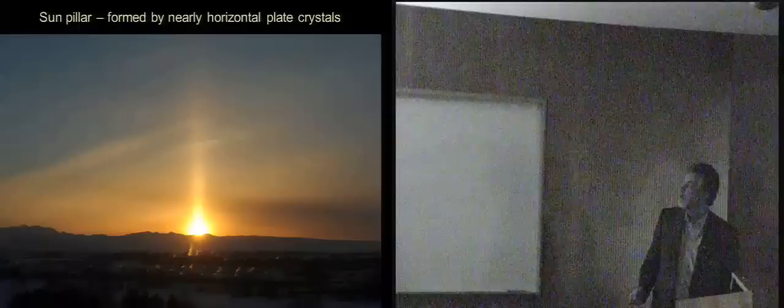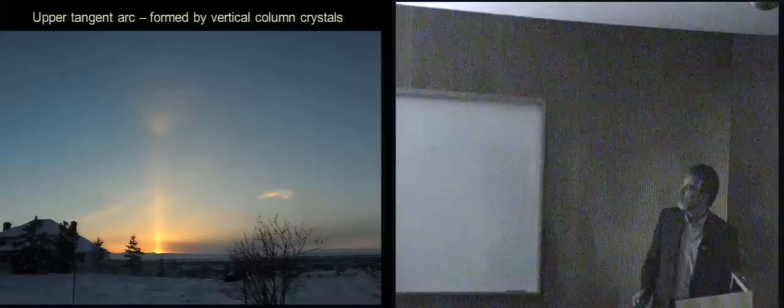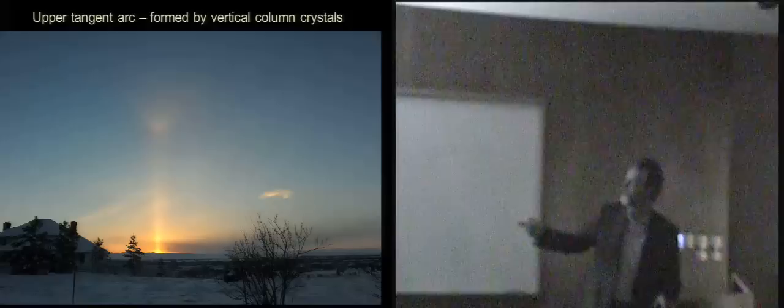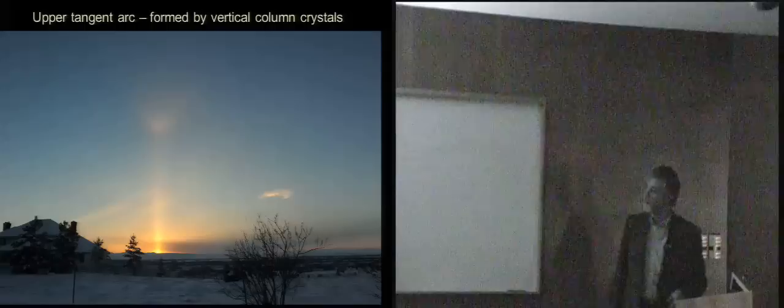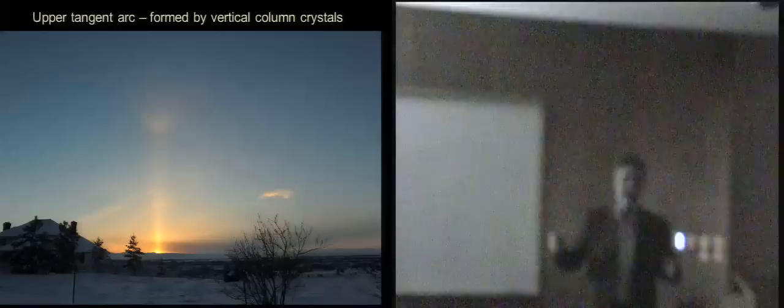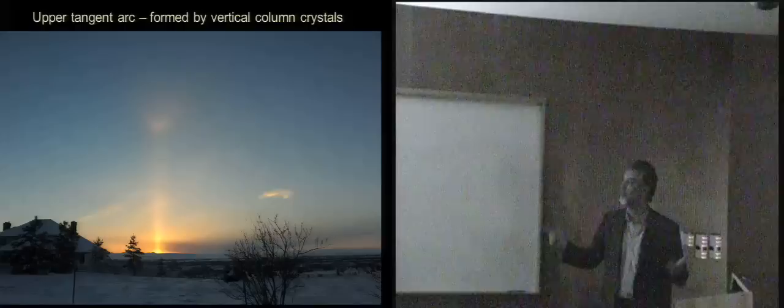A few minutes later this scene developed an upper tangent arc structure. Here's the light pillar with the upper tangent arc — and interestingly, we don't see any of the rest of the 22-degree halo. Normally the halo would go right through that point, but we just see the upper tangent arc separated from it. A really beautiful display, and this was just a couple weeks ago.